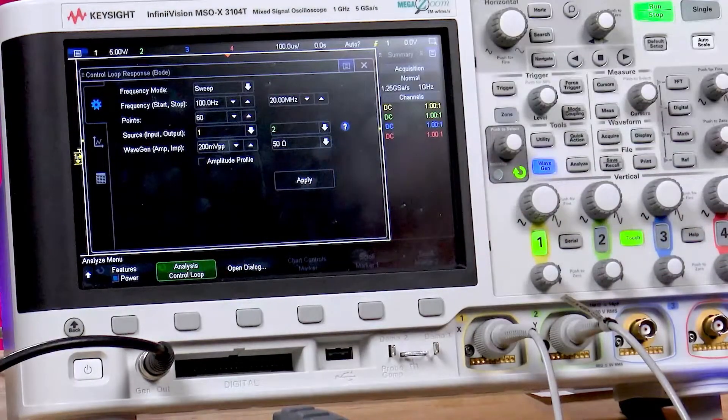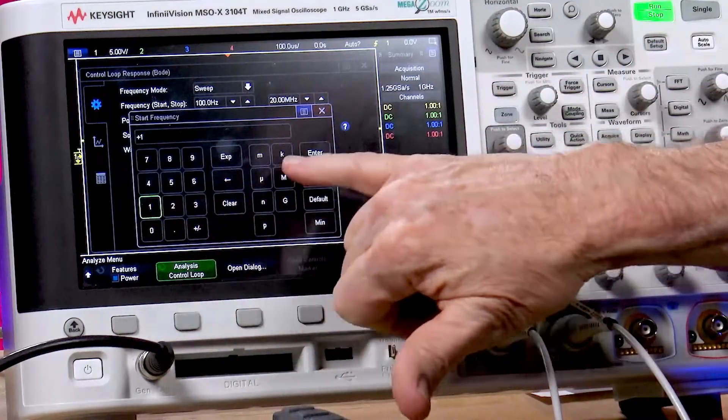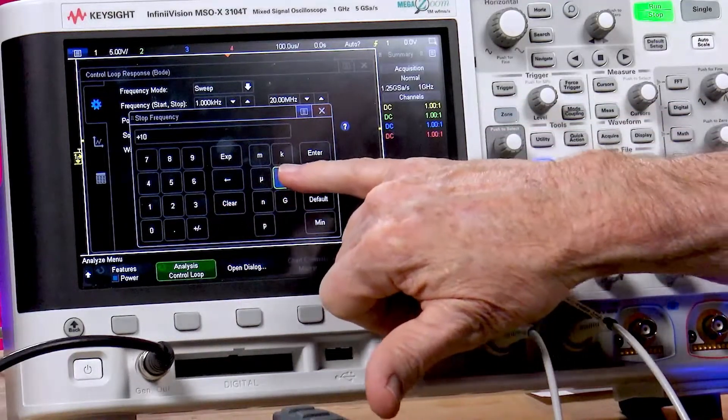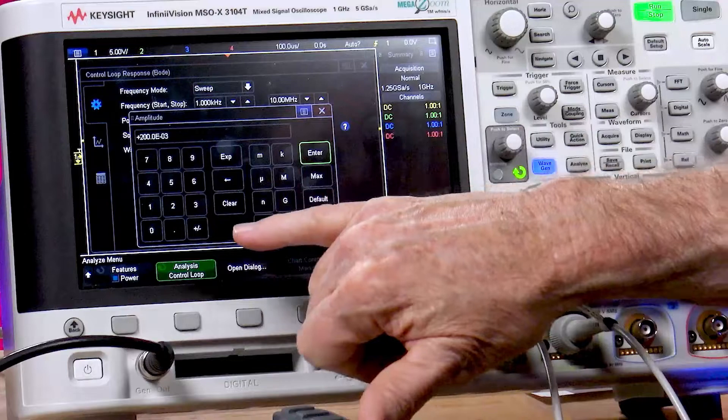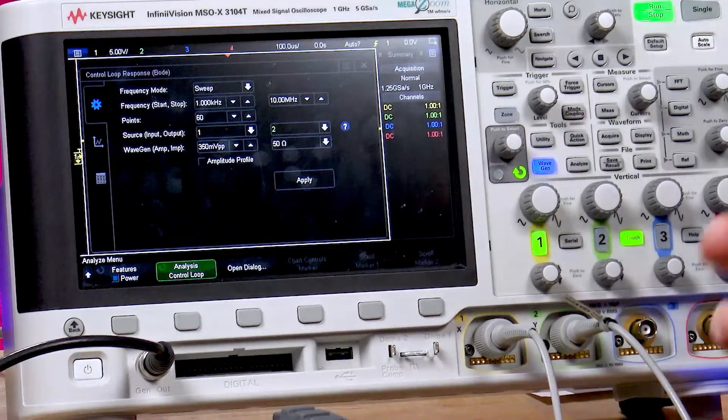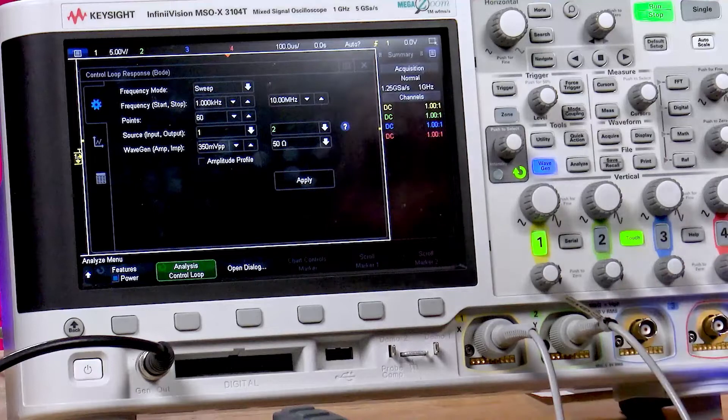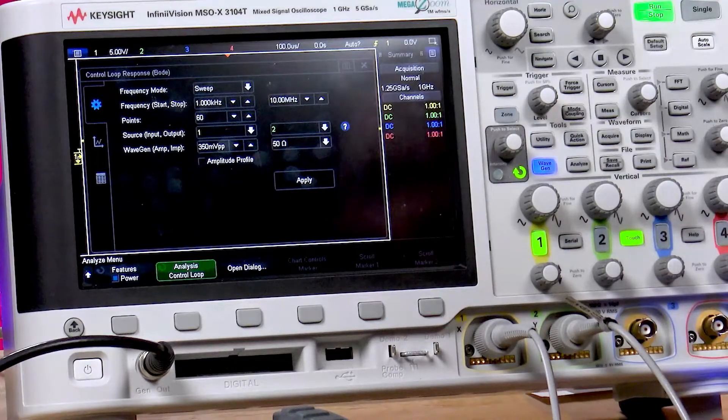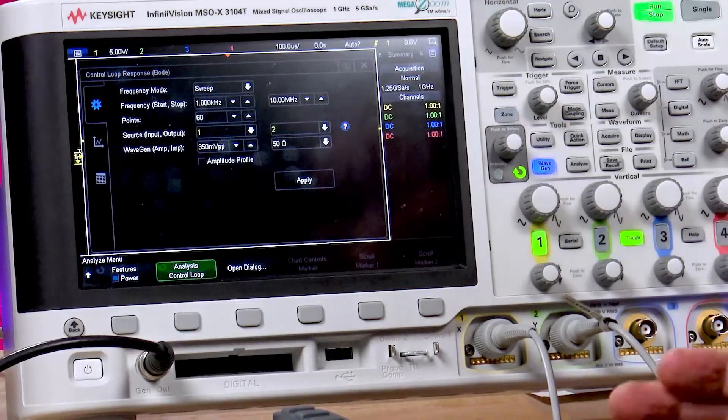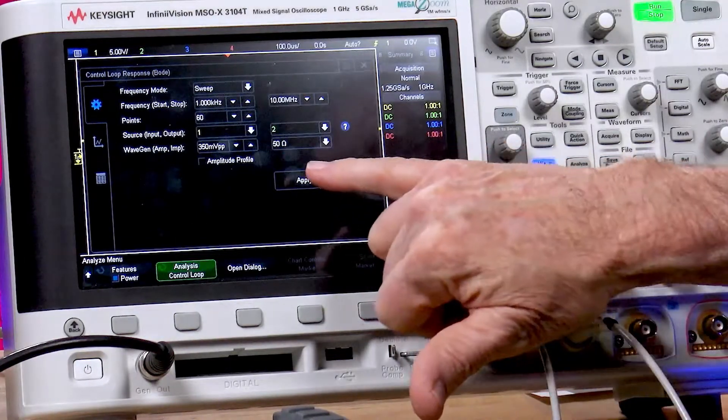Let's open the setup dialog. We can sweep as low as 10 hertz all the way up to 20 megahertz. Let's start at 1 kilohertz and go up to 10 megahertz. I'm going to change my input amplitude, test amplitude to 350 millivolts. Now, normally, people in the past have used network analyzers or standalone frequency response analyzers for this particular measurement. But Keysight innovated this measurement capability in the oscilloscope before any other vendors. So let's go ahead and run the test.